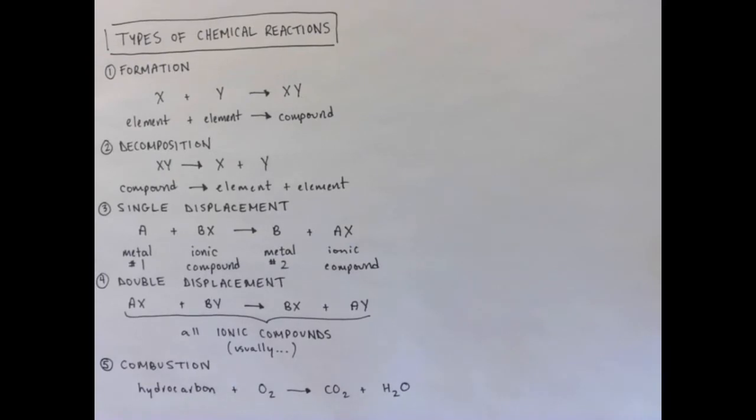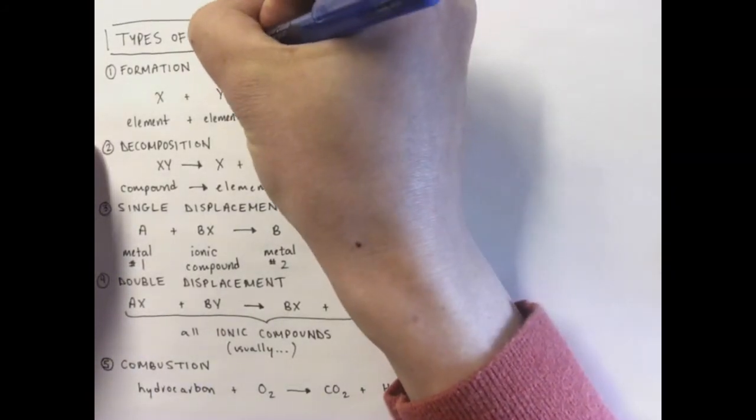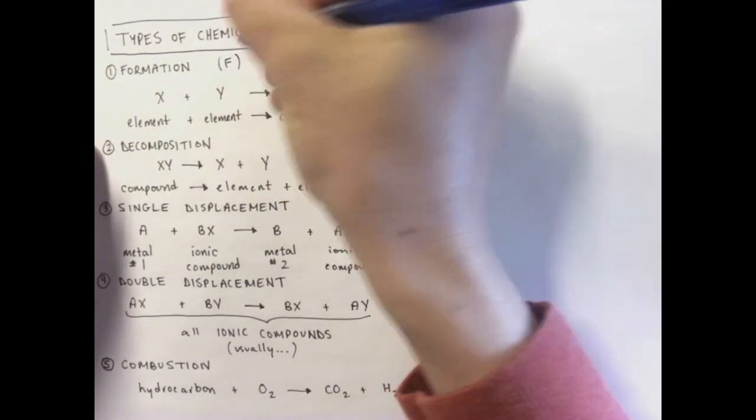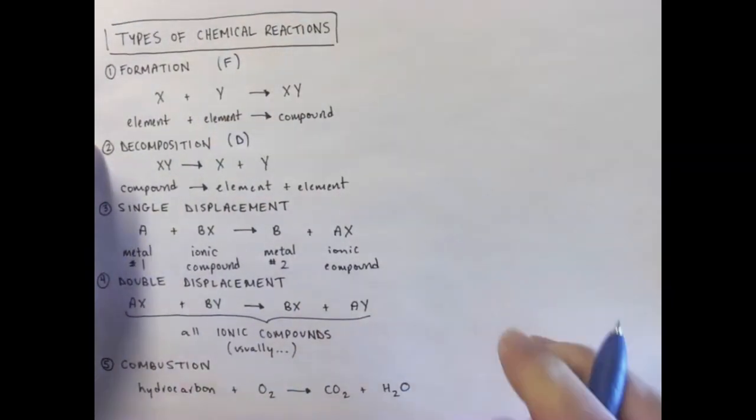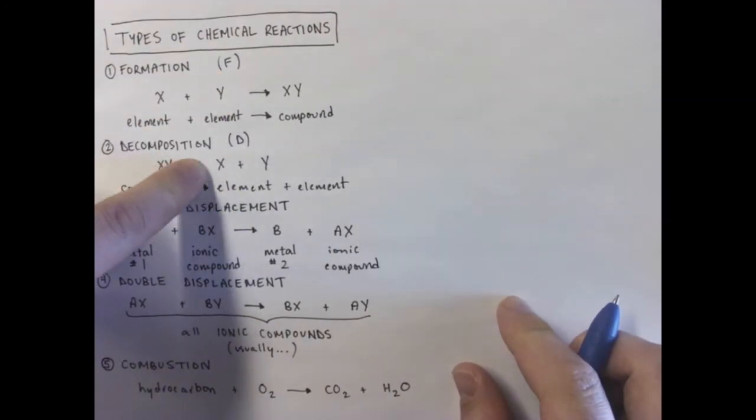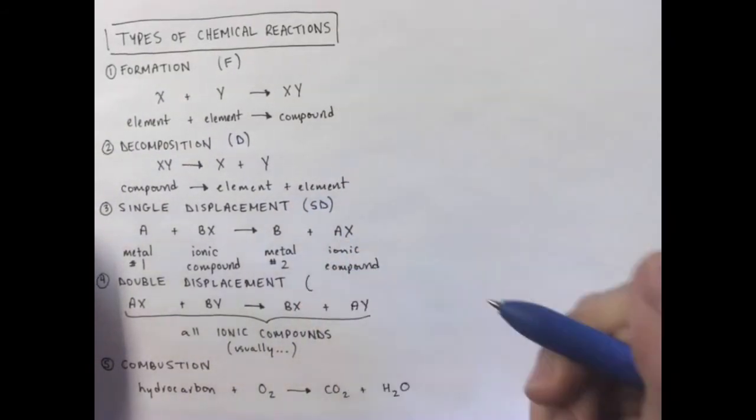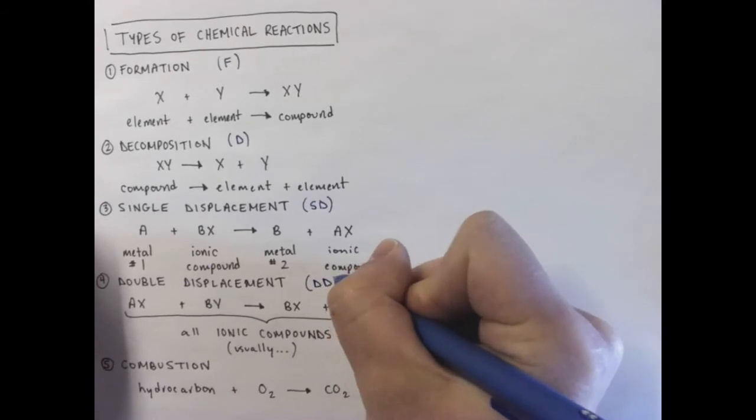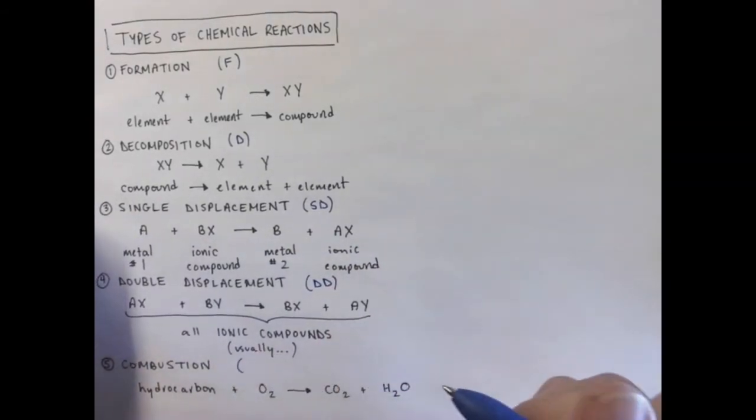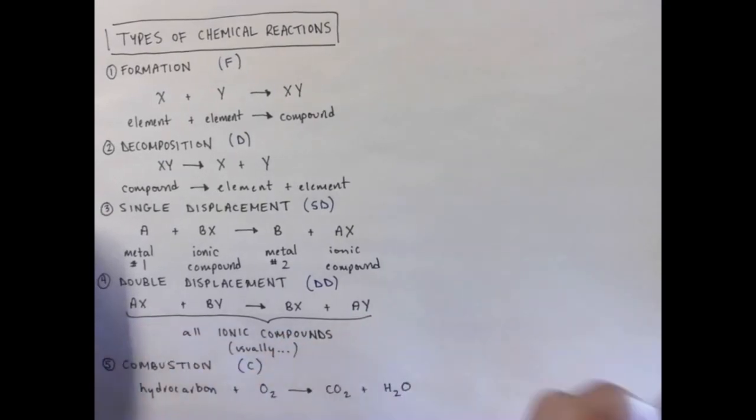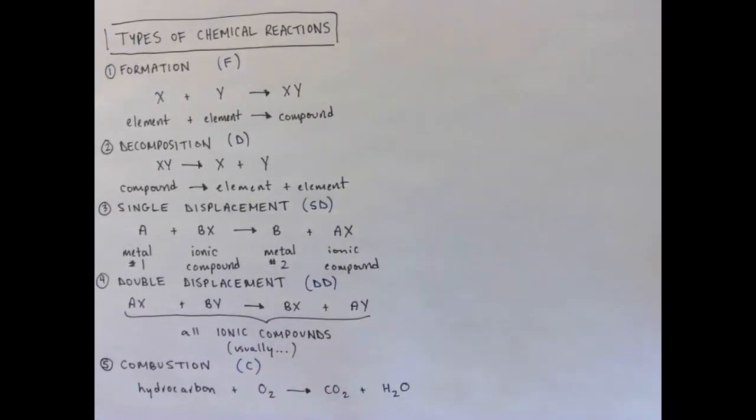Now, I'm not going to leave you there because we're going to do a few examples. And what we're going to do with these examples is label them as one of these five types. So just for brevity, I'm not sure if I used that word correctly, but hey, why not? Formation, I'm going to label with an F. Decomposition, I'm going to label with a D. And single displacement will be SD. Double displacement will be DD. And combustion will be C.